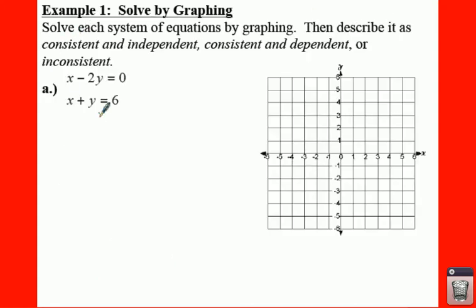Alright, so your first example here: we have to solve the system by graphing. Describe it as consistent independent, consistent dependent, or inconsistent. Let's first do the graphing part.